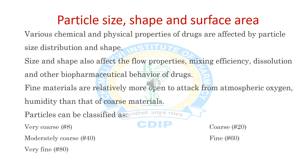The next property is particle size, shape, and surface area. Various chemical and physical properties of drugs are affected by particle size distribution and shape. Size and shape also affect powder properties, mixing efficiency, dissolution, and other biopharmaceutical behavior of the drug. Fine materials are relatively more open to attack from atmospheric oxygen and humidity. Particles can be classified as: very coarse (sieve number 8), coarse (sieve 20), moderately coarse (sieve 40), fine (sieve 60), and very fine (sieve 80).